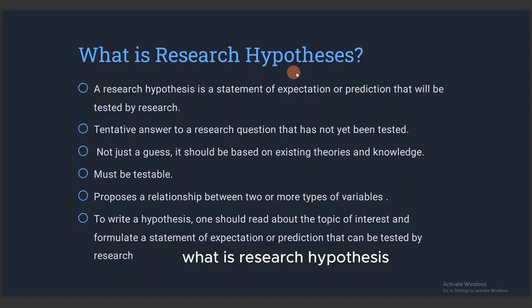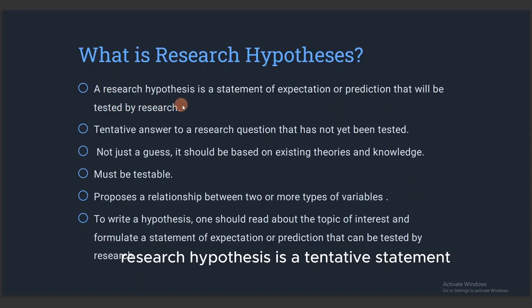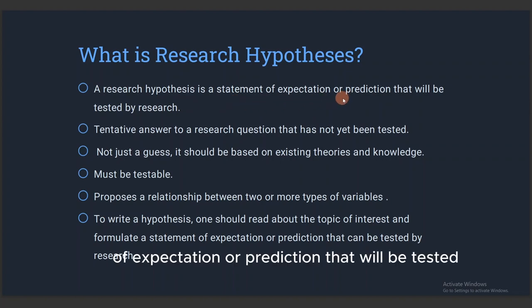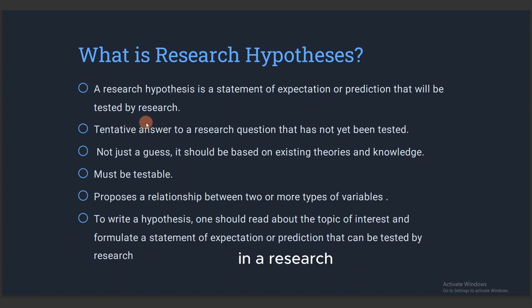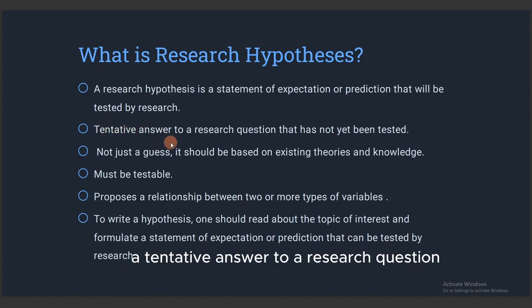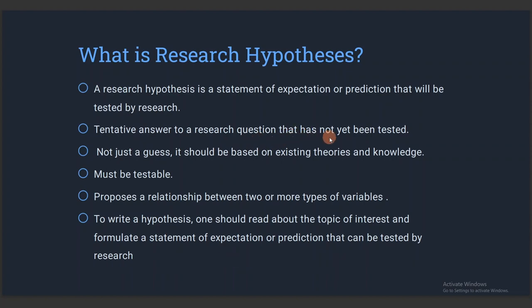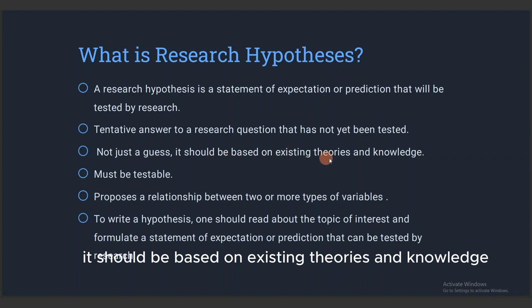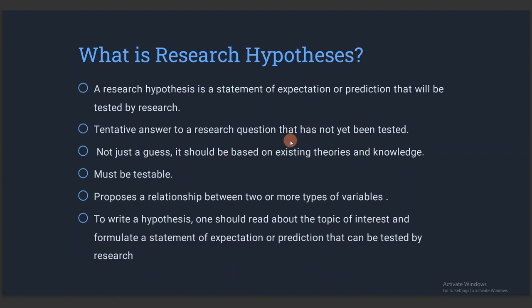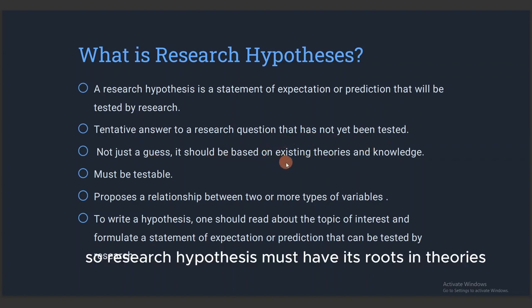What is a research hypothesis? A research hypothesis is a tentative statement of expectation or prediction that will be tested in a research — a tentative answer to a research question that has not been tested. It is not just a guess; it should be based on existing theories and knowledge. A research hypothesis must have its roots in theories.